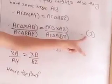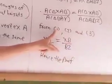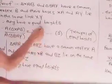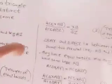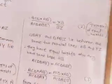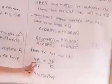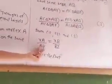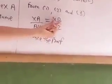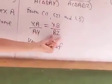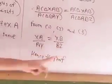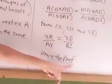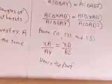From Equations 1, 2, and 3, both sides are equal. Therefore XA upon AY equals XB upon BZ. Hence proved — the ratios are equal.